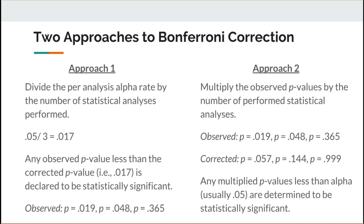Any of the multiplied p-values that are less than alpha — and again alpha for any particular analysis is usually 0.05 as the demarcation criterion for statistical significance — can be declared significant. In this case, none of the corrected p-values are statistically significant.